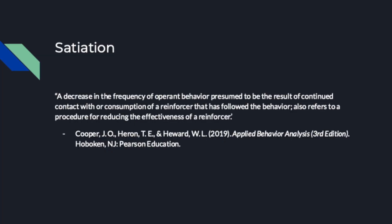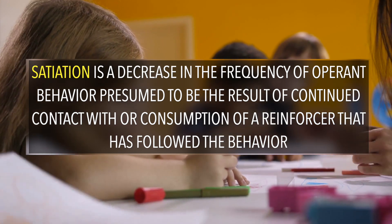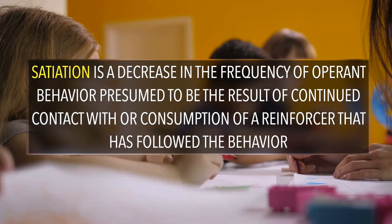The definition of satiation directly from the Cooper textbook reads: a decrease in the frequency of operant behavior presumed to be the result of continued contact with or consumption of a reinforcer that has followed the behavior. Also refers to a procedure for reducing the effectiveness of a reinforcer. An example would be you are craving candy. You decide to eat a bag of M&Ms. You have satiated that craving by eating those M&Ms.